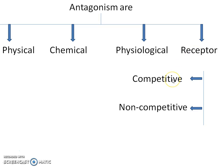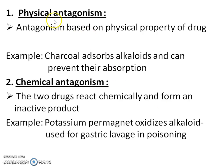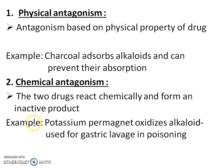Receptor antagonism includes competitive antagonism and non-competitive antagonism. Physical antagonism involves antagonism based on the physical property of a drug — for example, charcoal adsorbs alkaloids and can prevent their absorption, which is useful in alkaloid poisoning. In chemical antagonism, two drugs react chemically and form an inactive product — for example, potassium permanganate oxidizes alkaloids, used for gastric lavage in poisoning.